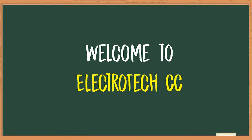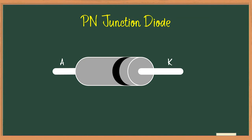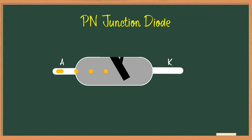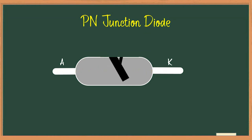Hello friends, welcome back to the lecture series of basic electronics. In the previous video we had discussed about the P-N junction diode. The diode allows the flow of current only in one direction, from anode to cathode, and it blocks the current in the opposite direction from cathode to anode. That is the reason that the diode is very useful in many applications like clipping, clamping, and rectification.